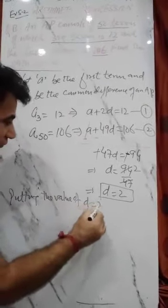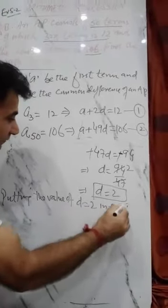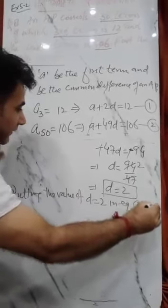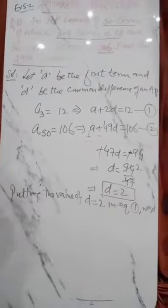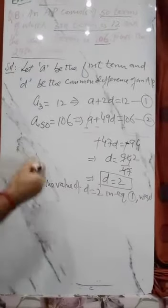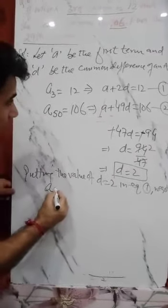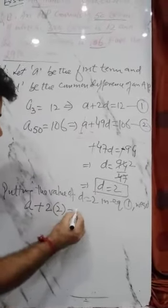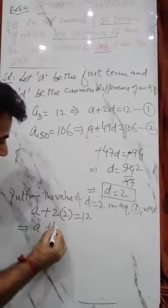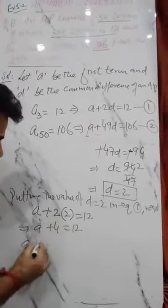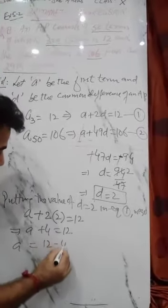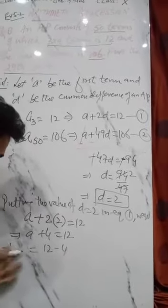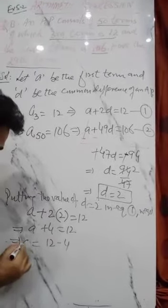In equation first we get, just as we did in question number 7, so a + 2d, d is 2, equals 12. So a + 4 = 12. So a value is 12 minus 4, what remains? a is 8.